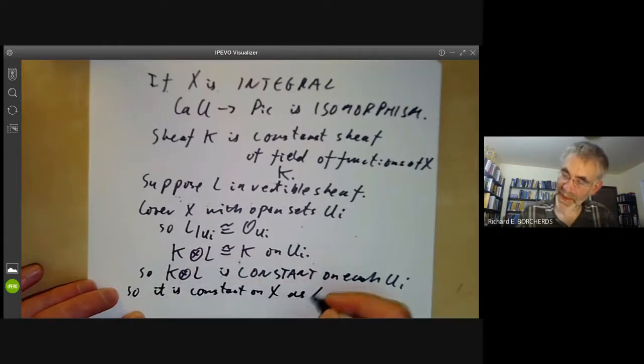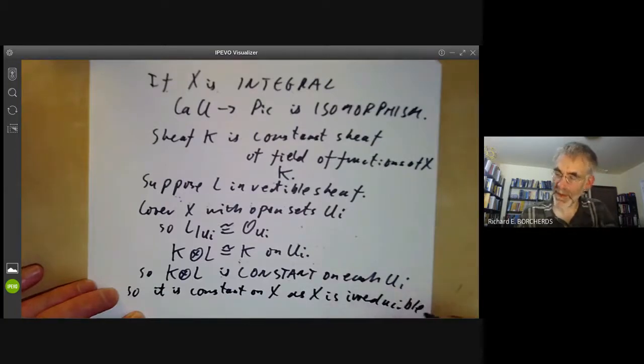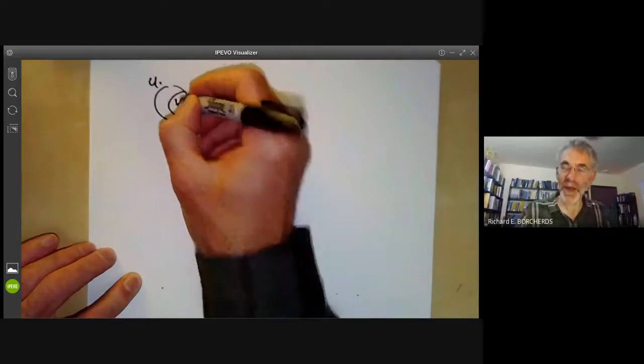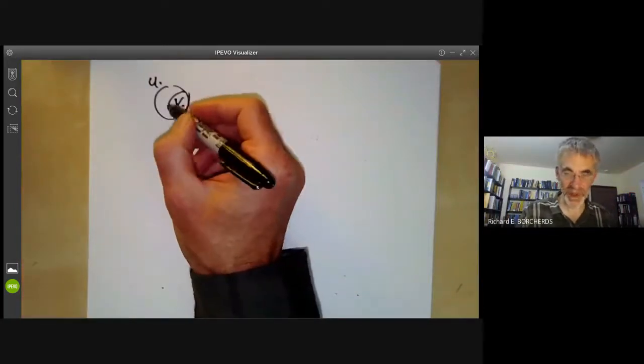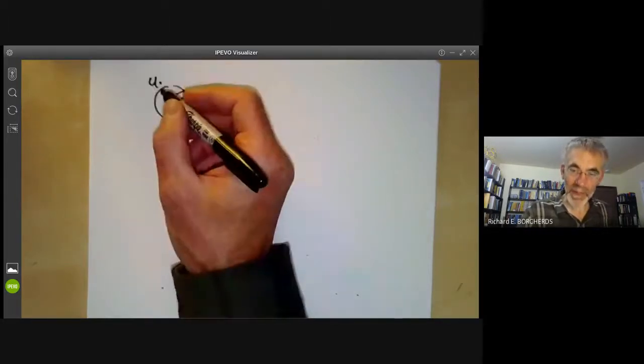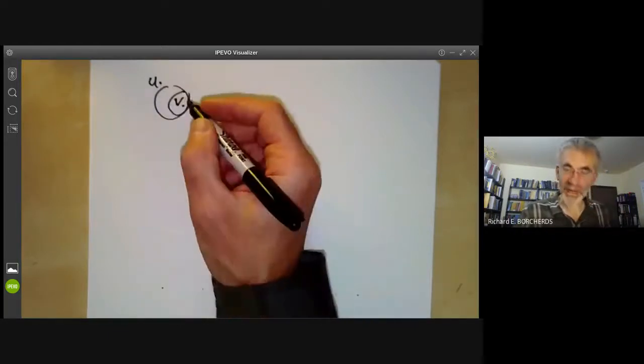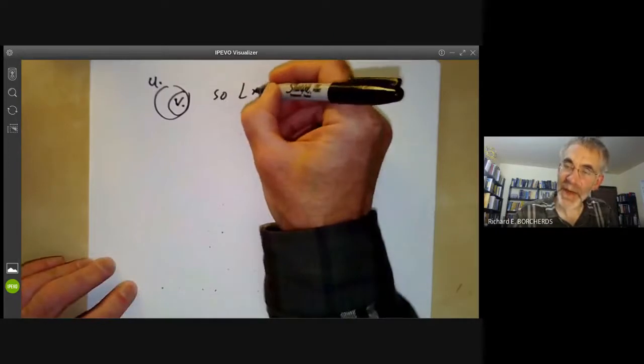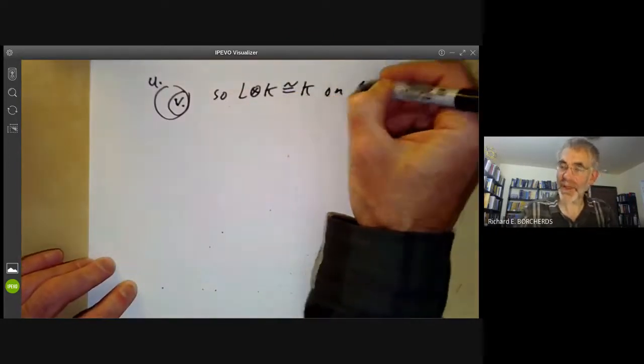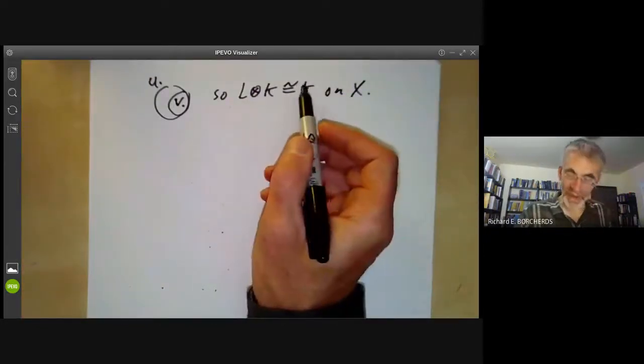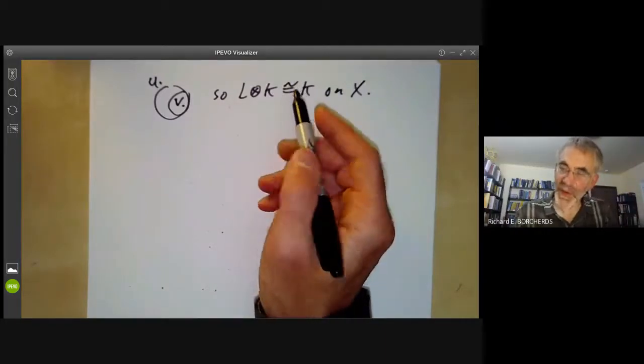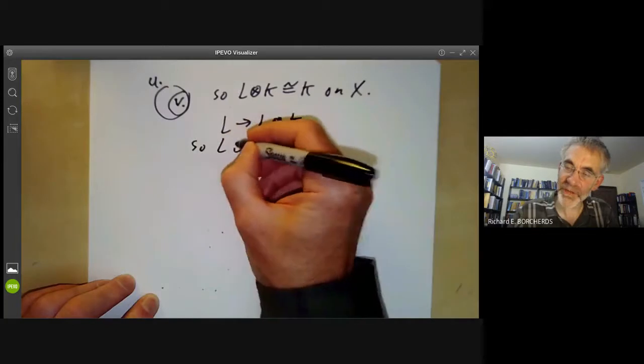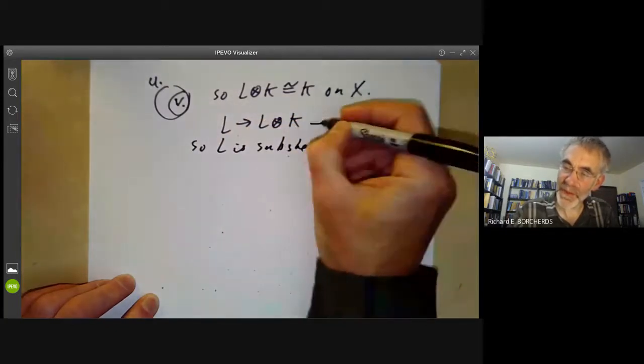This implies it is constant on X as X is irreducible. What's going on is if we pick any open subset U of X and any smaller open subset V, then the values of this constant sheaf on U is the same as the value on V, at least for sets of the open cover. So as it's a sheaf, it takes the same value on every open set. So L tensored with K is actually isomorphic with K on the whole of X because it has the same value. You can identify its value on each open set. This gives a map from L to L tensored with K, where you map L to L tensored with one. So L is a subsheaf of K because this is isomorphic to the constant sheaf K.